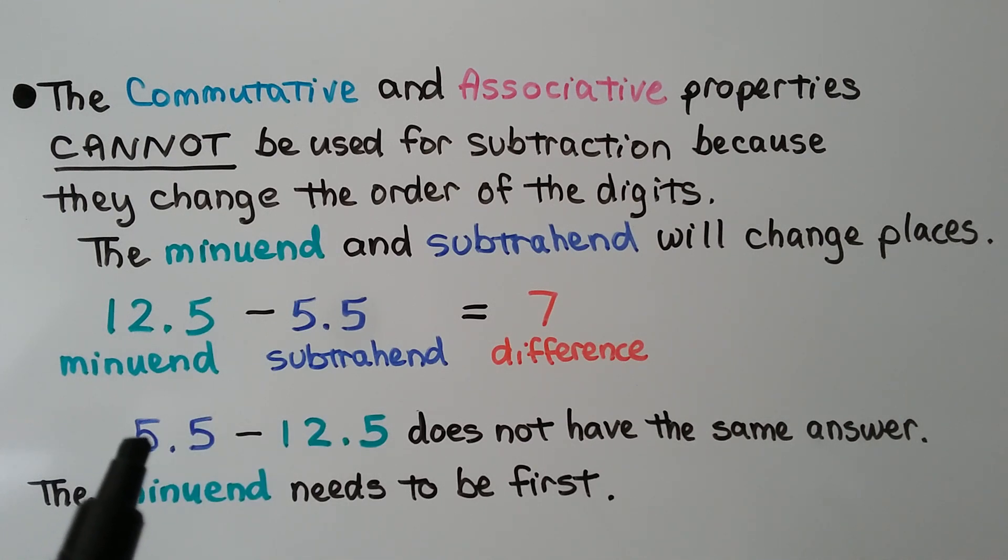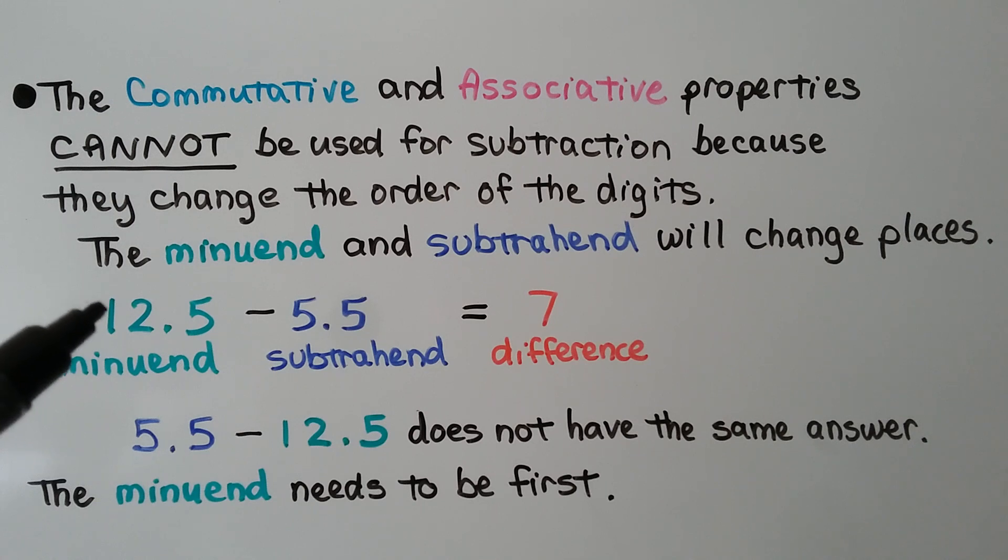And that does not have the same answer. The minuend needs to be first in subtraction. So we cannot use the commutative and associative properties for subtraction.